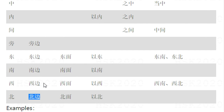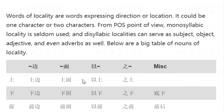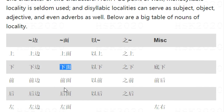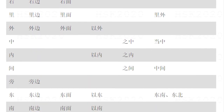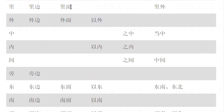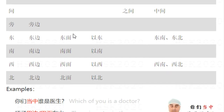Also we have the character 面, which technically means face. 上面 means above. 下面, 前面, 后面, 左面, 右面, 里面 meaning inside. 外面 meaning outside. Also we have 东面, 南面, 西面, 北面 — the four directions.